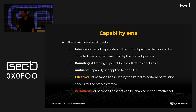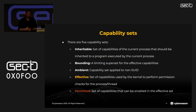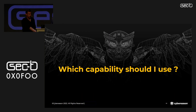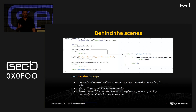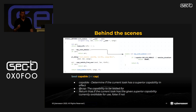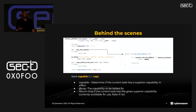The five capability sets are: inheritable, bounding, and ambient. But the most important for our talk is the effective capability set — this is the set that the kernel looks at when it tries to execute specific system calls. Another important set is the permitted capability set, which holds the capabilities that can easily become effective using some system calls. To determine which capability to use, we need to monitor which system calls our containerized app is using, then inspect the source code of the system call and look at the security checks at the beginning of the function.